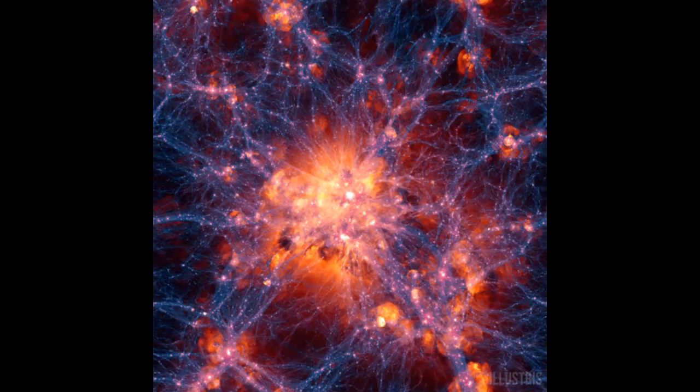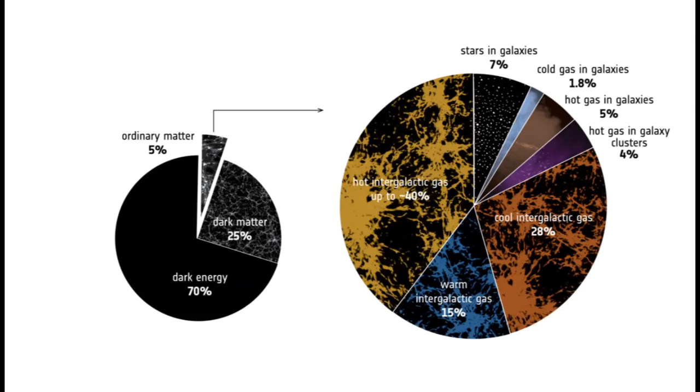Now, new research led by Fabrizio Nicastro from Italy's National Institute of Astrophysics has found what they say is the last reservoir of missing ordinary matter, pinning it down to filaments of oxygen gas at temperatures of around a million degrees Celsius. The findings reported in the journal Nature will help scientists testing the Big Bang theory to figure out the baryon census of hydrogen, helium or everything else on the periodic table. Researchers have a good idea where to find most of the ordinary matter in the universe.